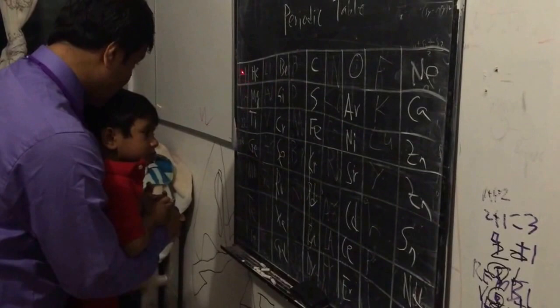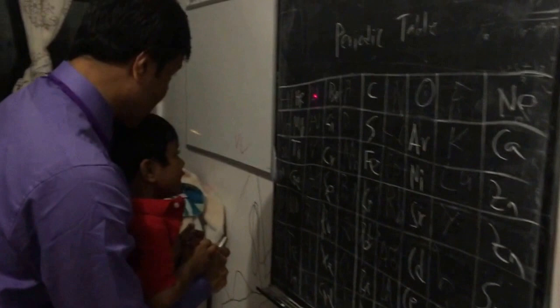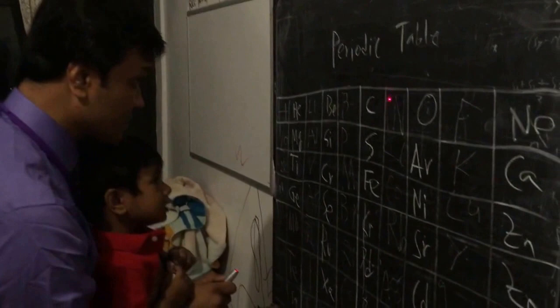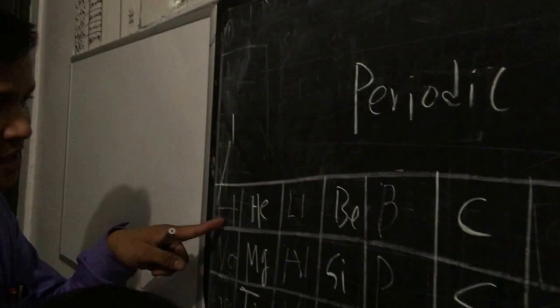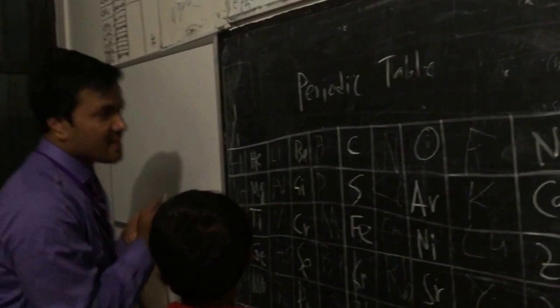Atomic number: one, two, three, four, five, six, seven, eight, nine, ten. So what is the atomic number right here? One. How many protons right here? One. What is the atomic mass? One plus one is two.